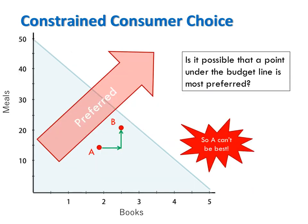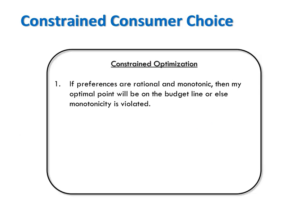Is it possible for a bundle inside the budget line to be the utility maximizing bundle? No. That's because compared to any bundle inside the budget line, there's some other bundle that has more of both X and Y and so would necessarily be strictly preferred. This gives us our first fact: if preferences are rational — meaning complete and transitive — and monotonic, then the optimal bundle will be on the budget line, or else monotonicity would be violated.